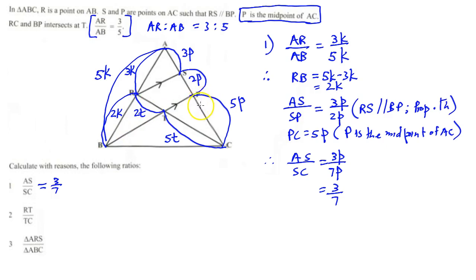So all we can say is for number 2, we can say RT over TC is equal to 2T all over 5T. And our reason would be that RS is parallel to BP and proportioned the other.